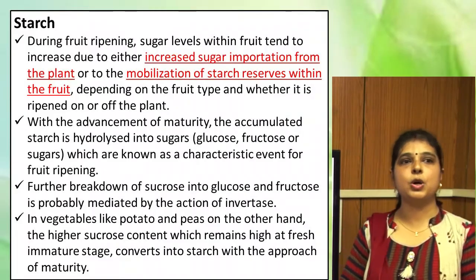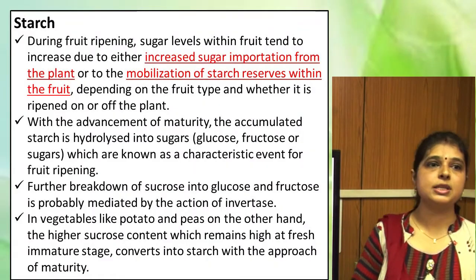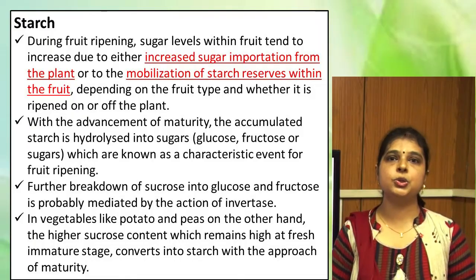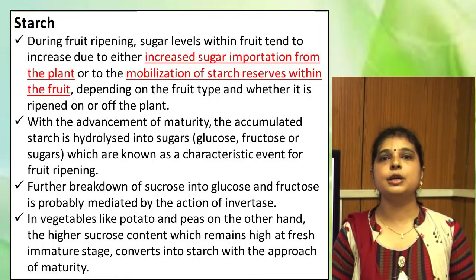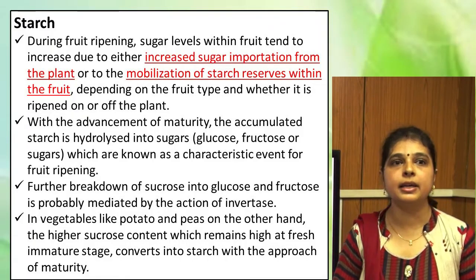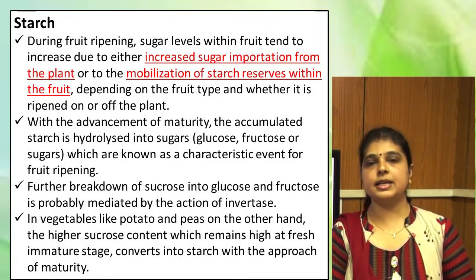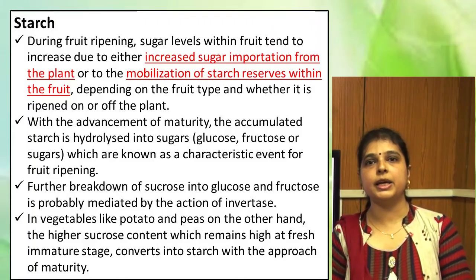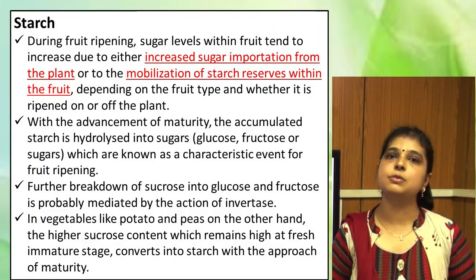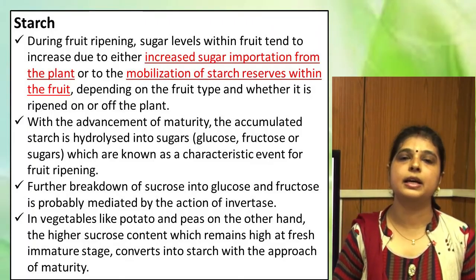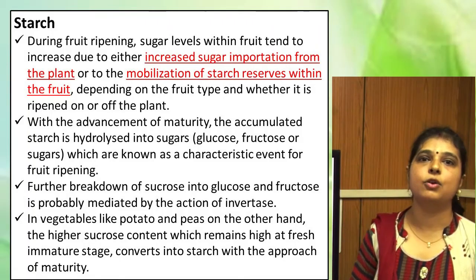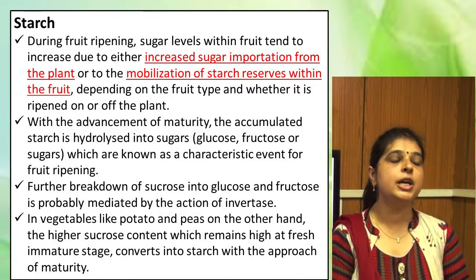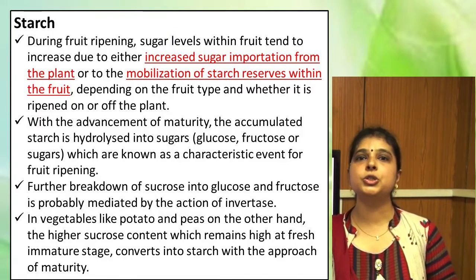The second change during ripening is starch conversion. During the ripening process you will notice the conversion of starch into sugar. If you eat an unripe mango it will taste completely different from a ripe one — this difference is due to the conversion of starch into sugar.